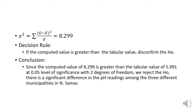For the decision rule: if the computed value is greater than the tabular value, we reject the null hypothesis. Since the computed value of 8.299 is greater than the tabular value of 5.991 at the 0.05 level of significance with 2 degrees of freedom, we reject the null hypothesis. There is a significant difference in the pH readings among the three different municipalities in Northern Samar.